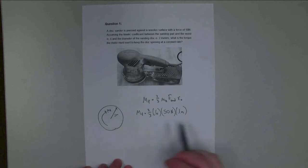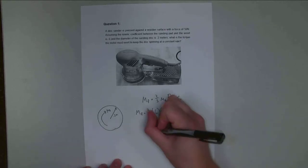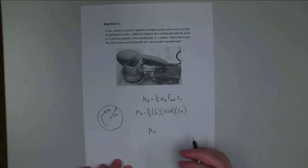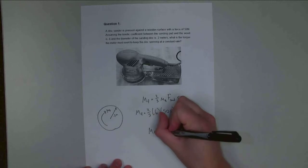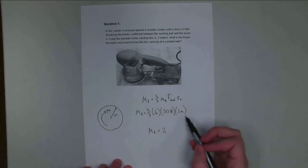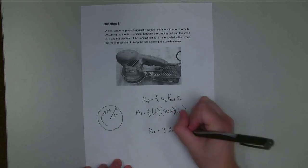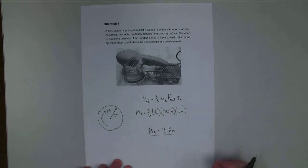So multiplying all these things together, the moment due to friction is going to be equal to 2, and the units are newton meters. And so that is the moment due to friction.